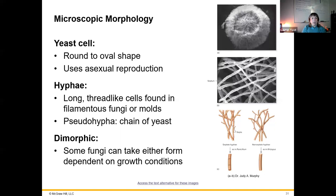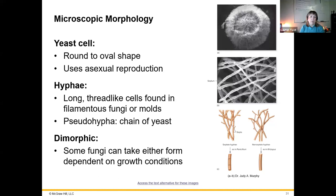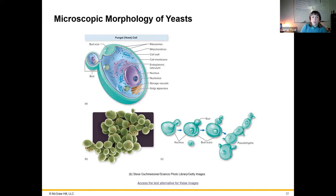Yeast cells tend to be oval in shape and reproduce asexually by budding off, pinching off new cells. The hyphae are long threads found in fungi and molds. Yeast can form pseudohyphae where the cells stack up on each other. Then we have dimorphic fungi that can take either form — the yeast form or the hyphae form. When you look at a yeast cell you can see buds coming off that are asymmetrical compared to the original cell, which is very typical of yeast creating new cells by budding.